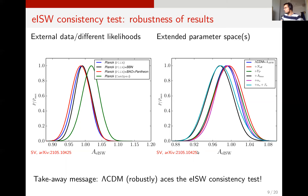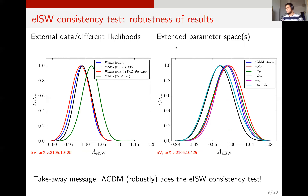For extended parameter space, I checked stability against minimal extensions allowing, for example, the effective helium fraction and the running of the spectral index to vary. As you can see from these plots, the result is perfectly stable across all these choices of data and model. The takeaway message is that Lambda CDM robustly passes the early ISW consistency test.